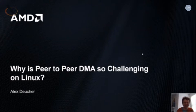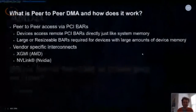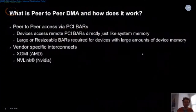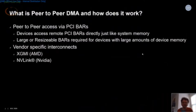For those of you that don't know, what is peer-to-peer DMA and how does it work? Peer-to-peer means device-to-device, and DMA is direct memory access — so you have devices accessing each other's resources directly without going through system memory or through the CPU.